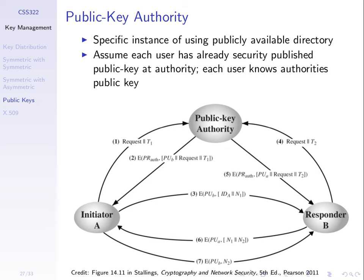When we say we trust the third party with public key distribution, it usually means we already have the public key of that third party. If initiator A trusts the public key authority before any exchange, that means A knows the public key of the authority, and they know it's the correct one. For example, they went through some manual approach to contact the authority, showed identification, and proved the correct public key.